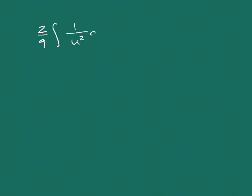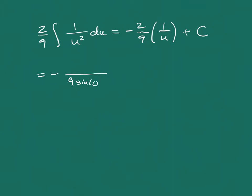Integrating 2/9 times 1 over u squared, we get negative 2/9 times 1/u plus our arbitrary constant. Coming back to our original trig substitution, that gives us 2 over 9 sine of theta in the denominator, plus our arbitrary constant. Now we need to figure out what sine of theta is in terms of the original variable x.